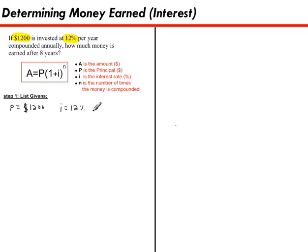Finally, I need to determine N, the number of times the money gets compounded. Since we're talking about money that's compounded annually, I know the money gets compounded once per year because that's what annually means, once per year. And we're doing that for a total of eight years. So I'm going to have eight compounding periods. So N is eight.